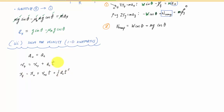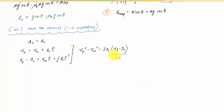Using this relationship, delta s is given to me in the problem statement, and I solved for ax in the previous step using my equations of motion. I know the initial velocity because it starts from rest, so V0 equals zero. What I have is an unknown Vx to solve for. So Vx — the velocity as it leaves the ramp — is equal to the square root of 2·ax·Δs, since the initial velocity in x is zero. Vx equals the square root of 2·ax·Δs.